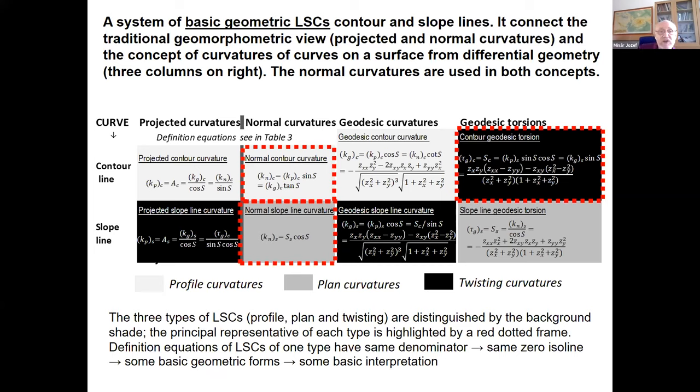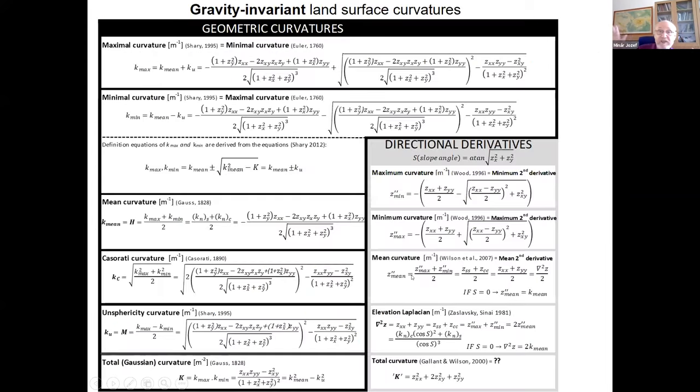The first can be in line with our traditional term as profile curvature, second one plan curvature, and the third twisting curvature. The most famous representative of this is curvature of streamlines in the map. However, we looked also for what from these various types that are inside of the types. From definition point of view, they have the same denominator in the equation. From this results the same isolines, and from this results the same basic geometric form and same basic interpretation. But we have various kinds of this plan, profile and twisting curvature. And the question is, what from these kinds is the best interpretable, the best for use? We define them as normal curvatures and geodesic torsion because of the best interpretability that I will show you later.